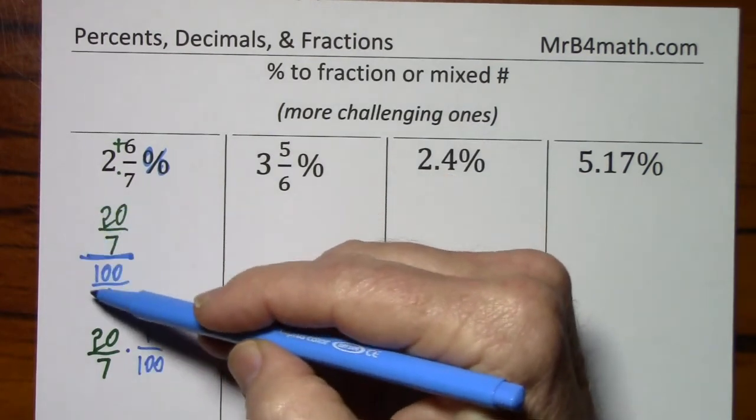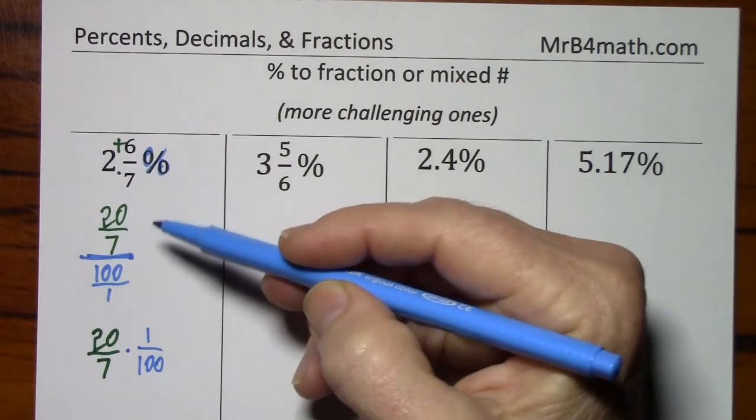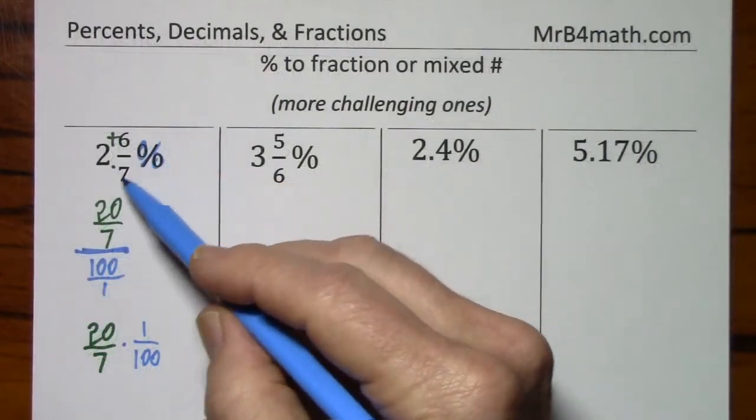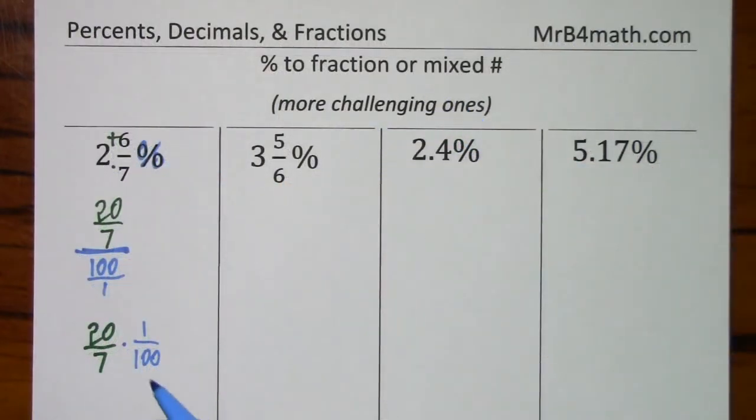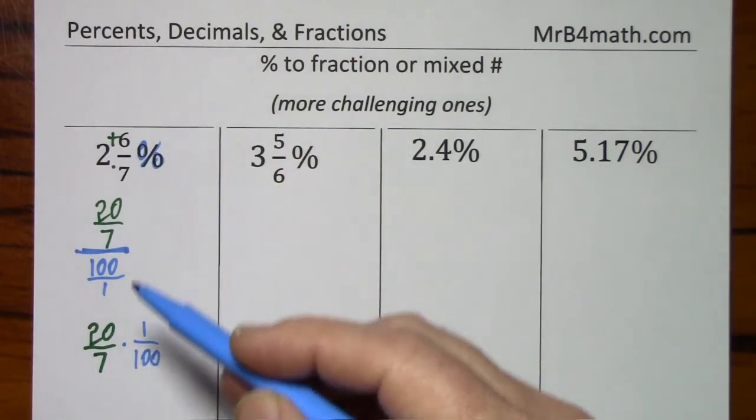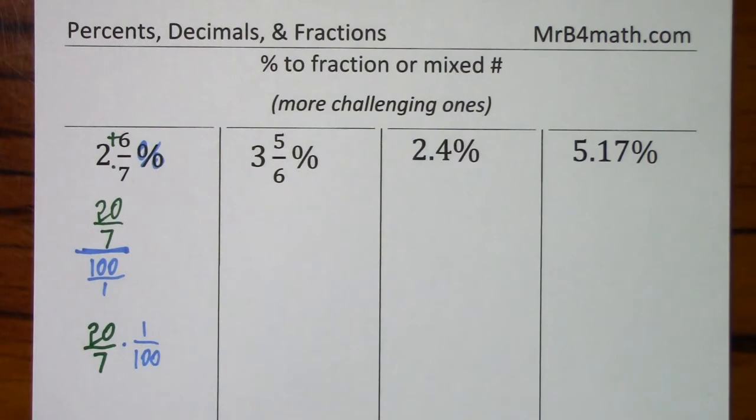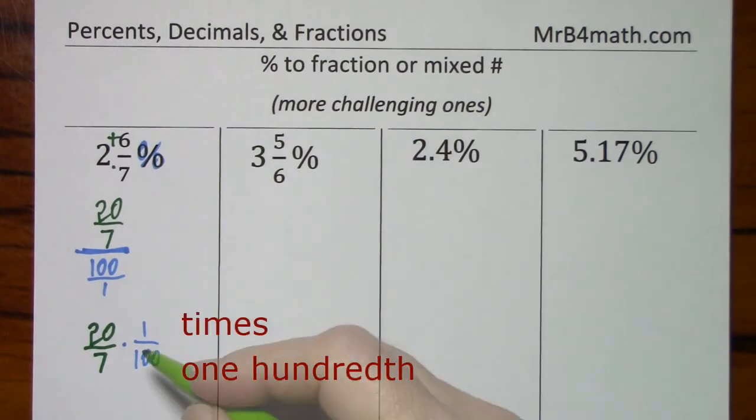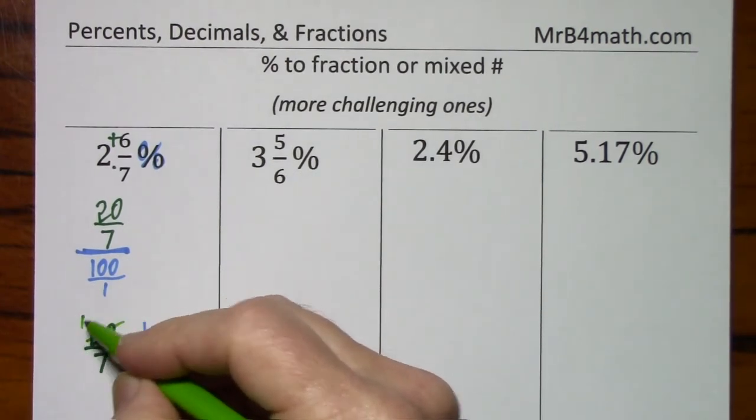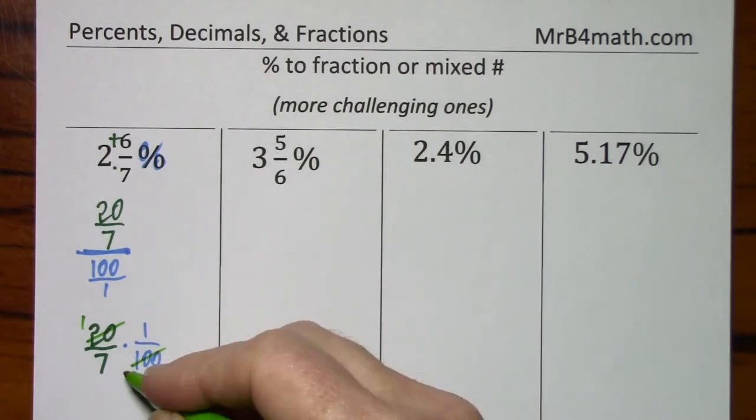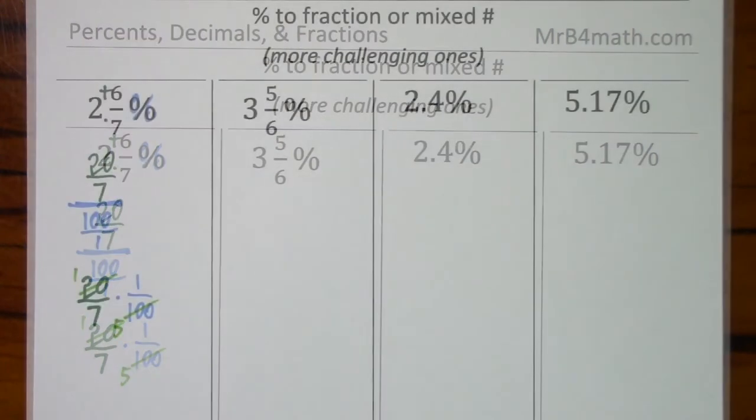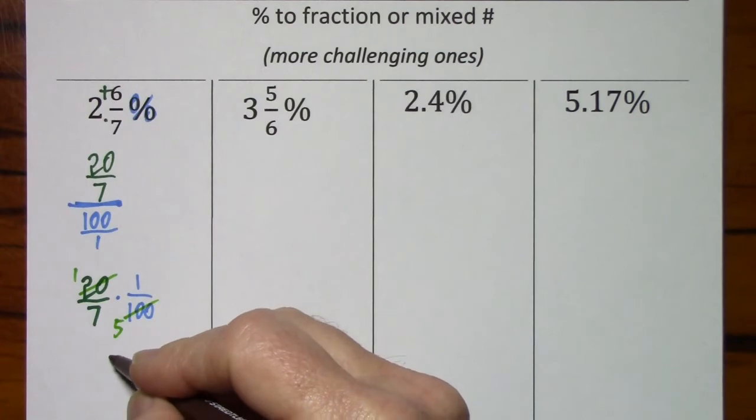I'm not going to write this step because it's just too much work. So with a mixed number percentage, it just ends up being easier to write the percent sign as times 100. We can reduce here, divide by 20, divide by 20. So we end up with 1 thirty-fifth.